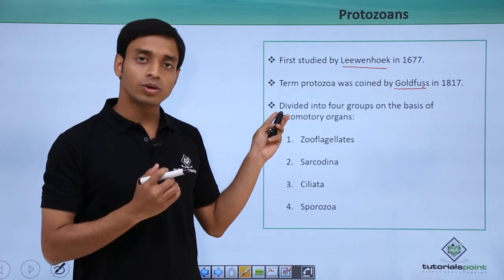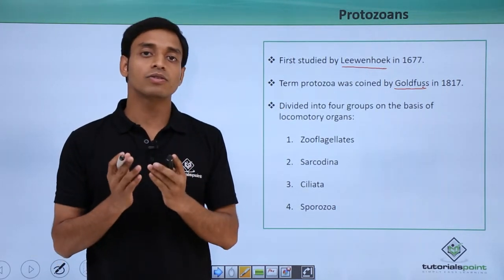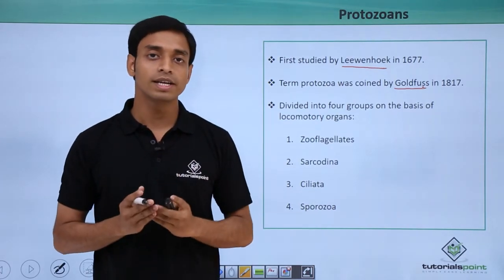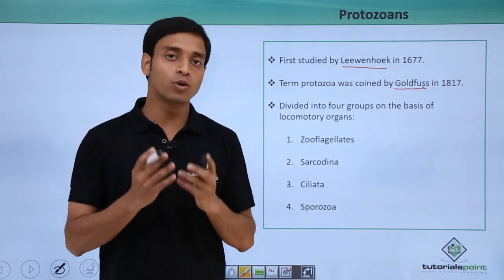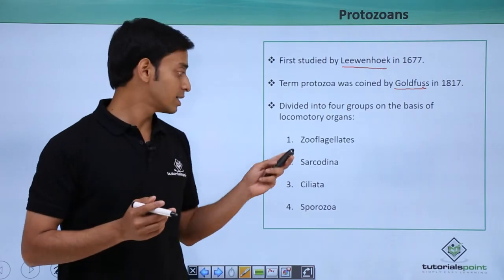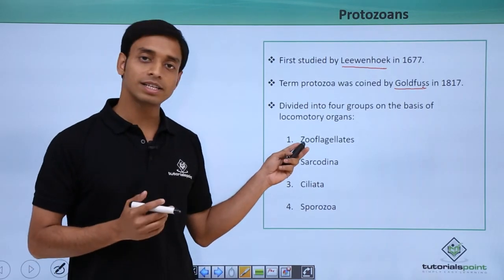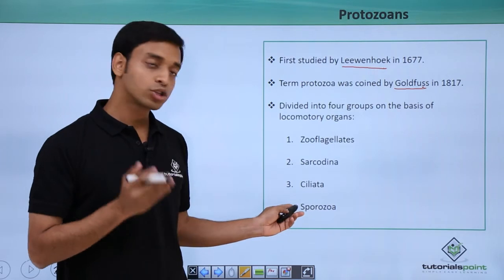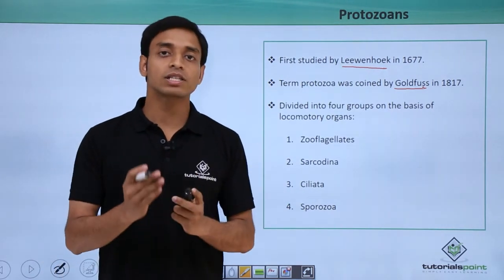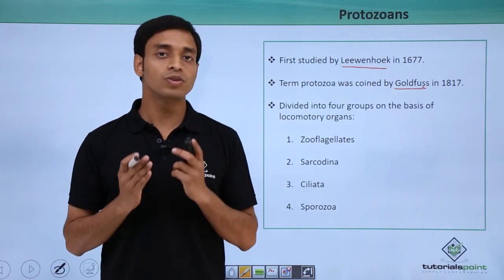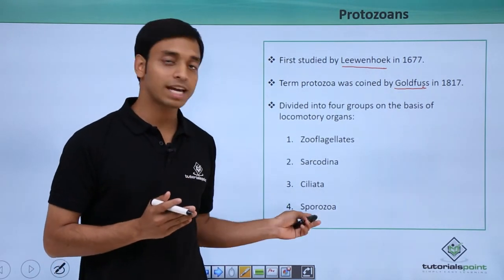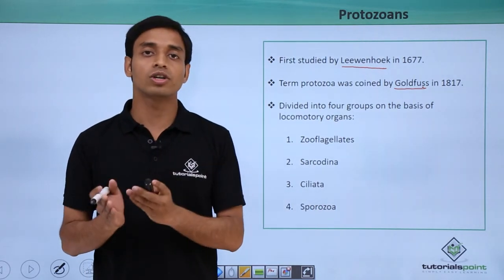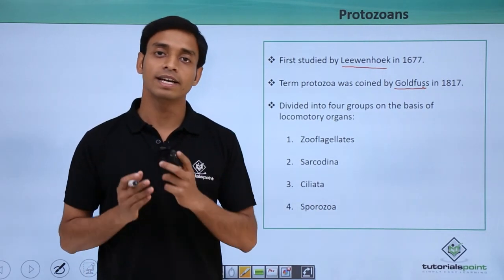Protozoans, on the basis of the presence of various locomotory organs, have been divided into four categories: zooflagellates, sarcodina, ciliata, and the fourth one is sporozoa. In the next videos, we are going to talk about all these types of groups based on their different locomotory organs and their characteristics in detail.